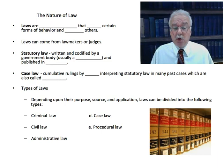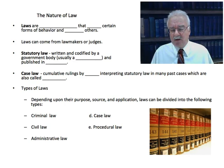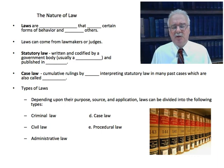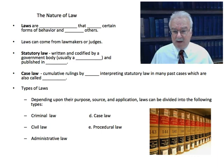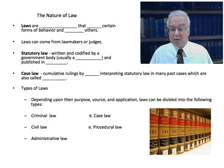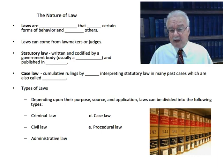Case law consists of the cumulative rulings by judges interpreting statutory law in many past cases. These past cases where they interpret the law are called precedents. It's the job of the courts to interpret the law when the meaning is not clear — somebody might challenge a law as unconstitutional, or courts might have to rule on the meaning of a certain word. When higher courts make these rulings, they become legal precedents and future courts are expected to abide by them. Precedents can be overturned by future courts, although the longer a precedent stays in effect and the more courts affirm it, the more it becomes set in stone and less likely to be overturned.